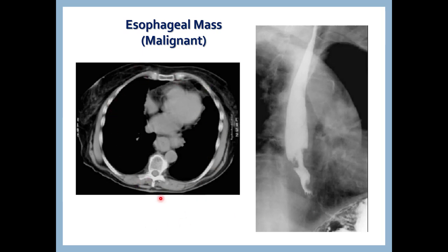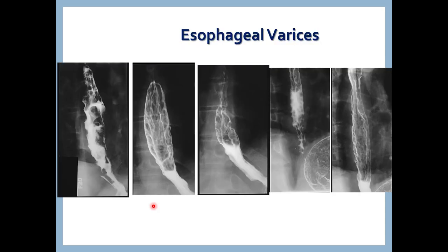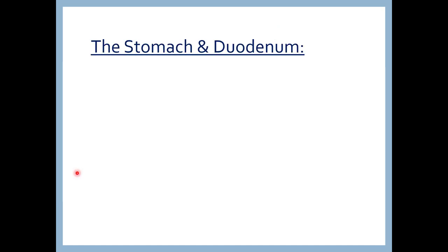On CT scan axial/transverse cut of the chest: the esophagus shows an irregular soft tissue mass filling it. Normally the esophagus is smaller and filled with air, not soft tissue mass — this is malignant esophageal mass. Esophageal varices occur in cases of portal hypertension with dilatation of the gastroesophageal portosystemic anastomosis. These venous anastomoses appear in barium swallow as serpiginous irregular filling defects in the esophagus. Full comment: barium swallow showing multiple serpiginous filling defects of the esophagus representing esophageal varices.